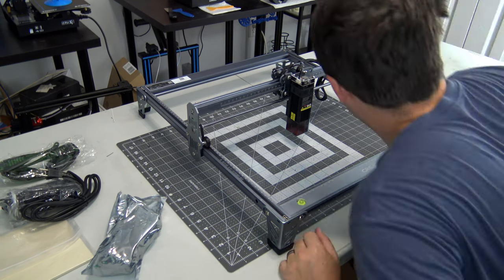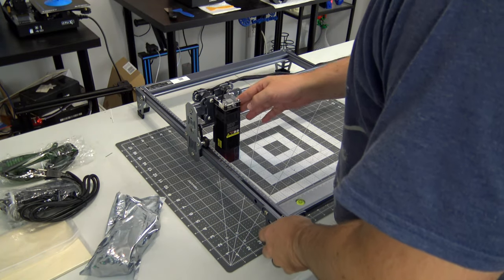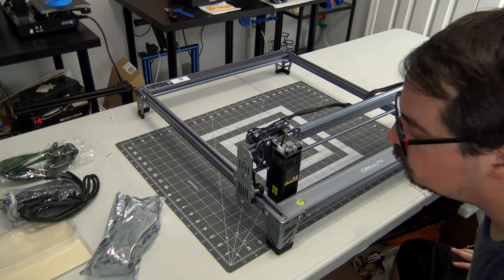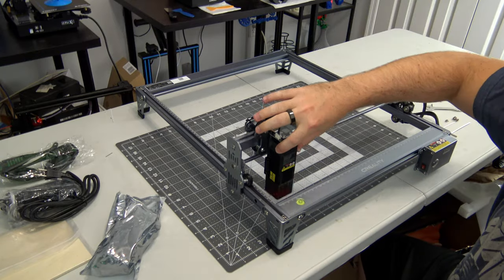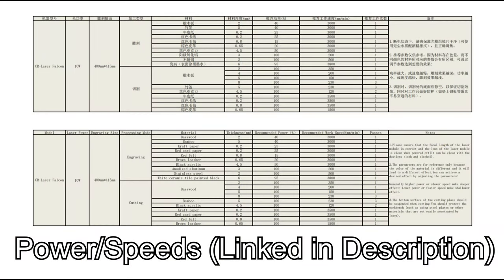I wish their instructions included warnings of what materials should not be used. There is no mention of dangerous materials like PVC that should not be cut in the engraver. First time laser buyers should be warned to only cut materials they know are laser safe.